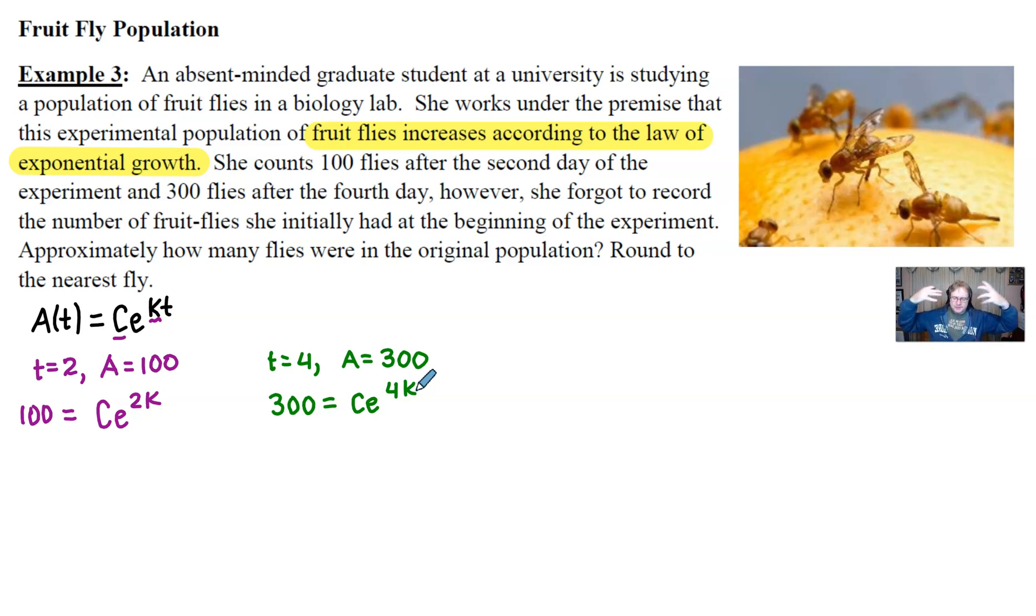Now, if the juices are flowing, you probably can realize that you can solve this system of equations simultaneously. And that's where we're going to go with this next. You're going to take essentially 100 = Ce^(2k) along with 300 = Ce^(4k). And we're going to solve this.